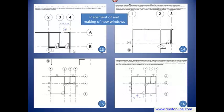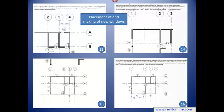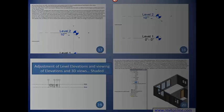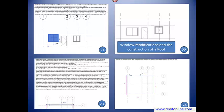Slides 13, 14, 15, and 16 show the placement of and making of new windows. Slides 17, 18, 19, and 20 show adjustments to the level elevations and viewing exterior elevations in 3D views along with shading. Slides 21, 22, 23, and 24 show how to modify windows and the construction of a roof.